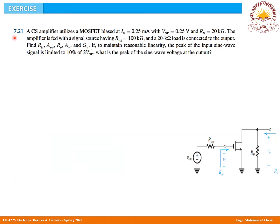Students, here we have Example 7.21. We have a common source amplifier with Id equals 0.25 milliamperes, overdrive voltage of 0.25 volts, and Rd is 20 kilo-ohms. R-signal value is 100 kilo-ohms, and RL value is 20 kilo-ohms. We have to find out various parameters like the input resistance, AV0, and other parameters. First of all, input resistance — we know the answer to that. We do not have to solve that even, because it is very simple.